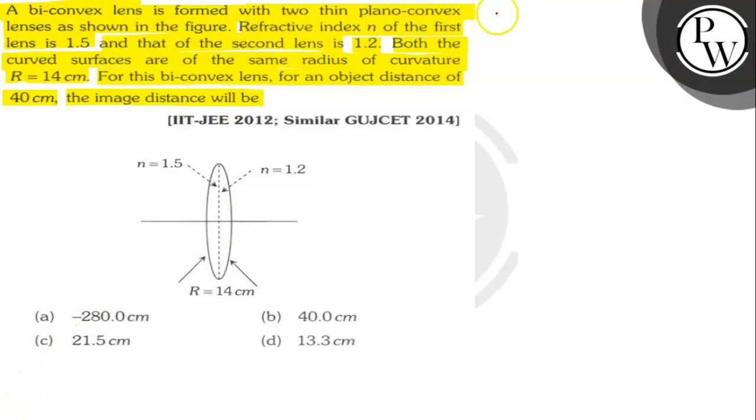So applying lens maker's formula for lens 1. For lens 1, 1 by f1 equals mu minus 1 into 1 by r1 minus 1 by r2.